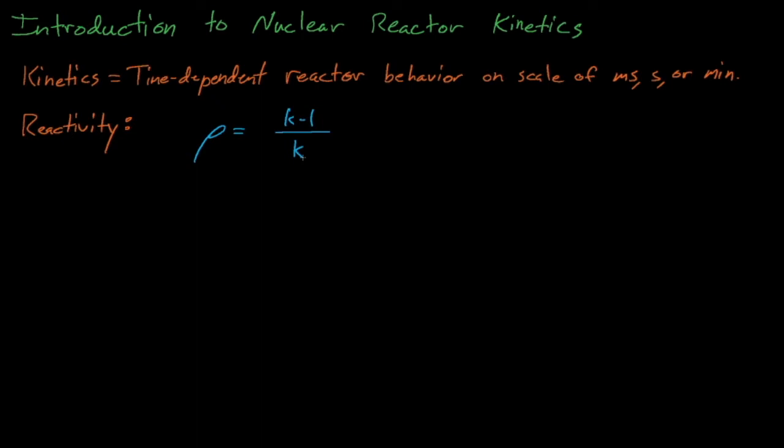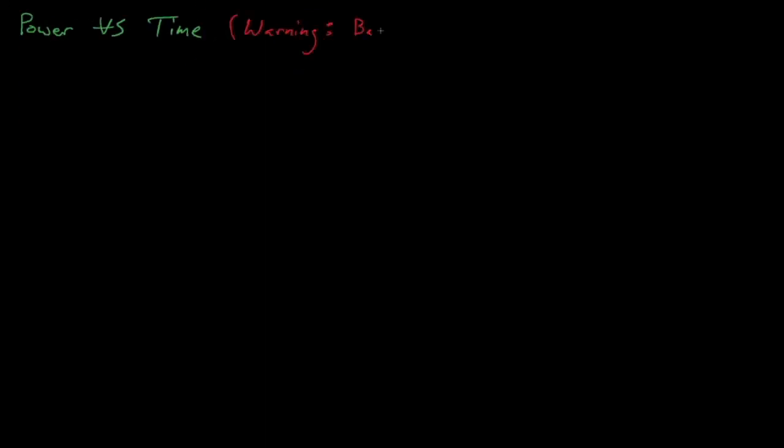So how does a reactor respond to a reactivity insertion? Let's start out with a very simple model that actually assumes incorrect physics. This model assumes that the power P of a reactor is equal to its initial power, P naught, times k effective to the power of t over lambda.